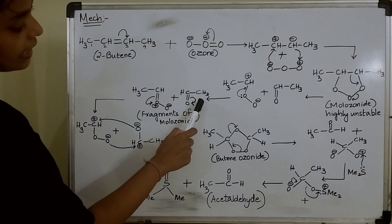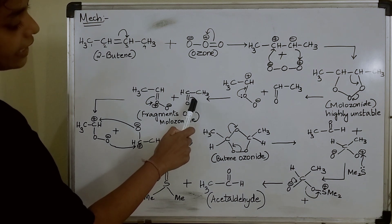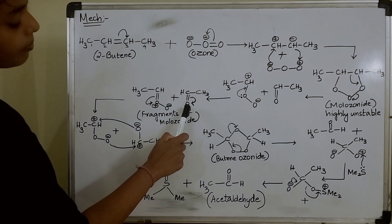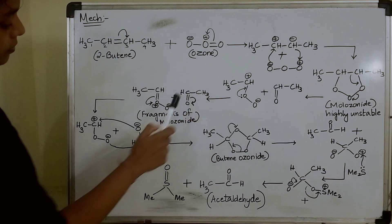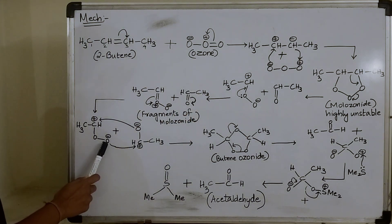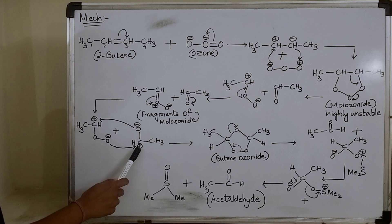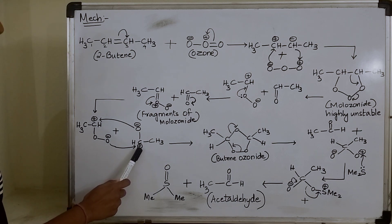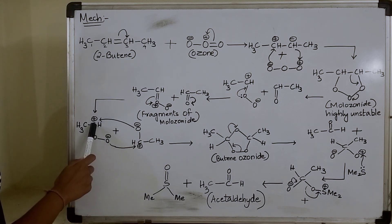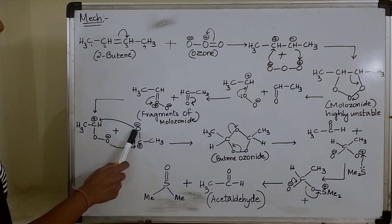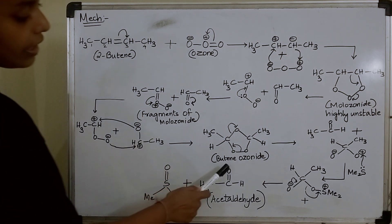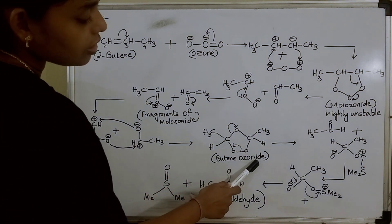In the same way in acetaldehyde, this oxygen will take the bond by getting a negative charge, leaving this carbon positively charged. Now this negatively charged oxygen will form a bond with the positively charged carbon, and the positively charged carbon will form a bond with the negatively charged oxygen, giving butene ozonide.